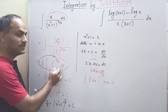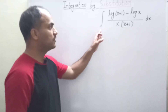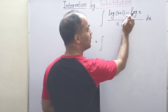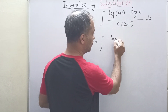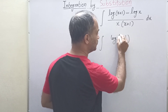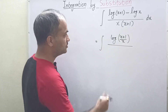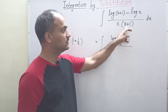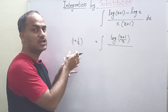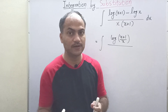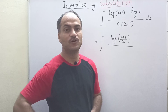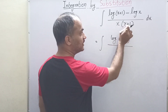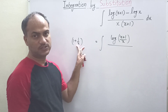Let us see the next question, which has an expression in terms of log. First we simplify: log a minus log b equals log(a/b), so the expression becomes log((x+1)/x). Simplifying further, this equals log(1 + 1/x). Now the key is to find this expression somewhere else in the integral — every question gives you a hint, and I will tell you those hints and tricks in my videos.